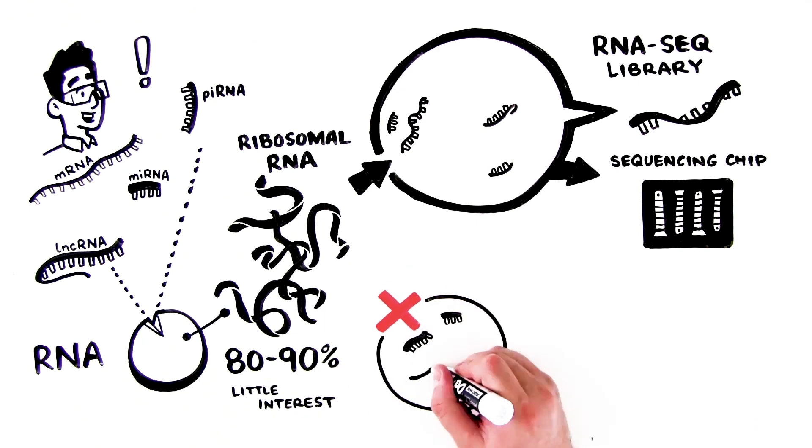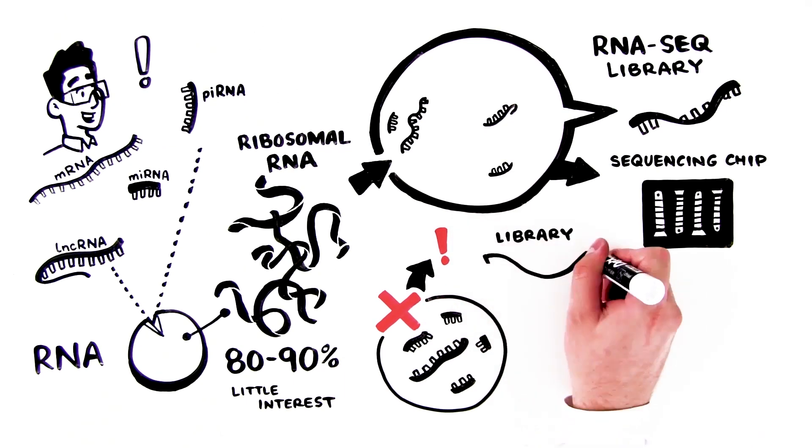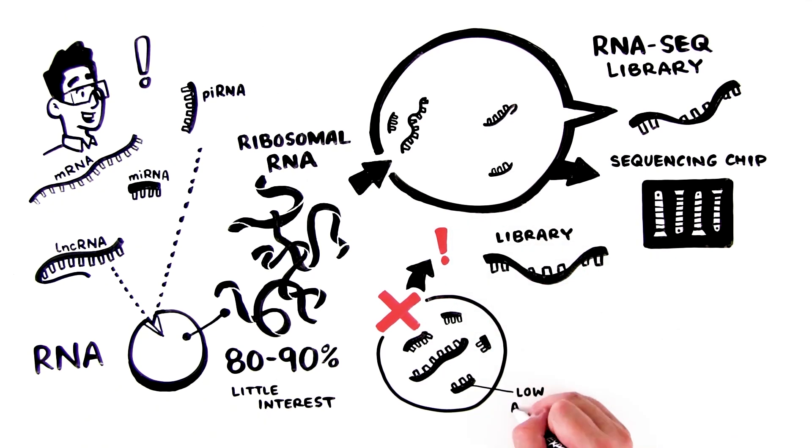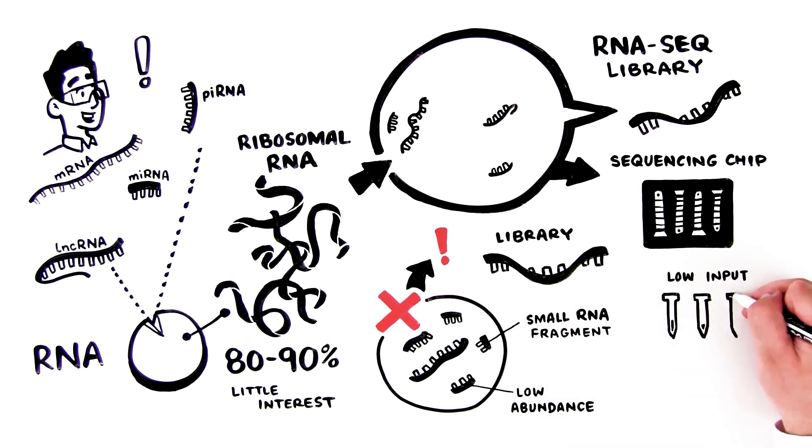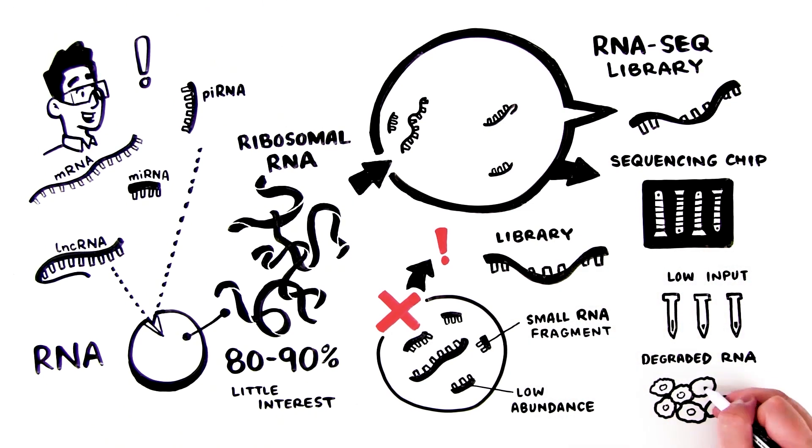Valuable information can be lost when depletion methods remove ribosomal RNA prior to library construction. This is especially true for low-abundant or small RNA fragments, and when working with low-input or highly-degraded RNA.